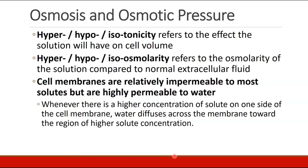This allows us to lay down some vocabulary. Tonicity refers to the effect a solution has on cell volume — a fluid can be hyper-, hypo-, or isotonic. We can also talk about osmolarity: something can be hyper-, hypo-, or isoosmolar, referring to the osmolarity of the solution compared to normal physiologic extracellular fluid. This is important because cell membranes are relatively impermeable to most solutes and ions, but highly permeable to water. So whenever there's a higher concentration of solute on one side of the cell membrane, the ions typically don't move, but water will diffuse across toward the region of higher solute concentration in an effort to equalize osmolarity on both sides.